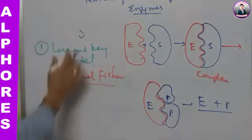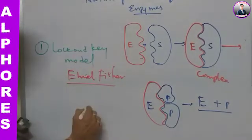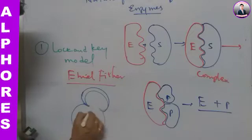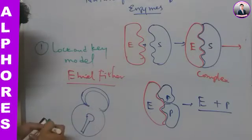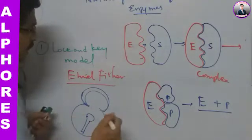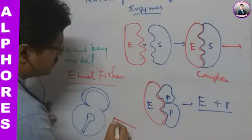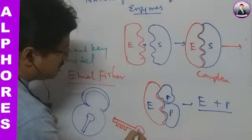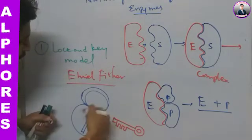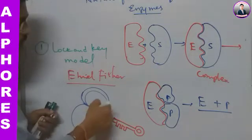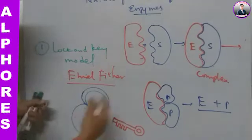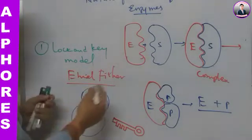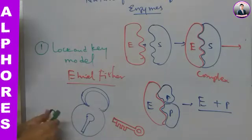This is the lock and key model — just as a simple lock opens with only a particular key, the key has a special design where the lever fixes into the grooves and the lock opens. This is the simple explanation of the lock and key model by Emil Fischer.